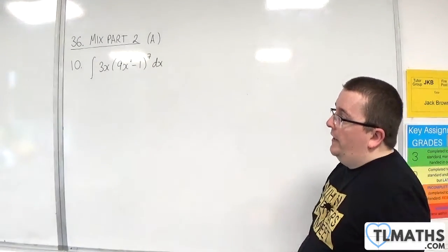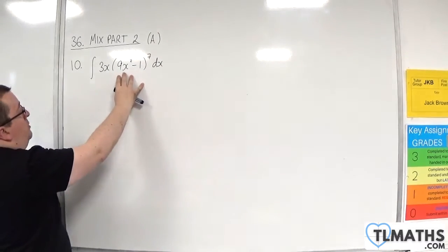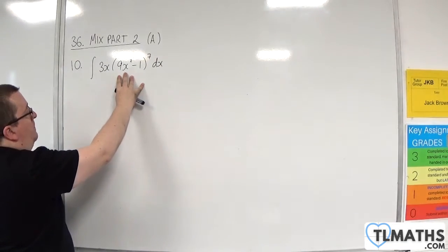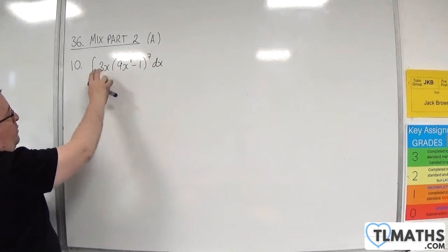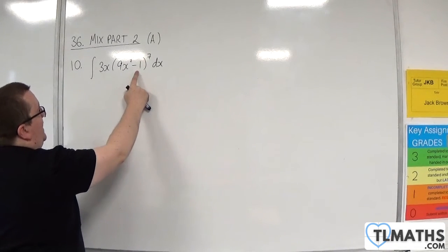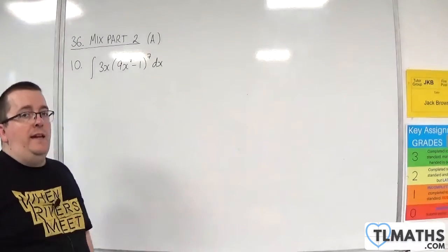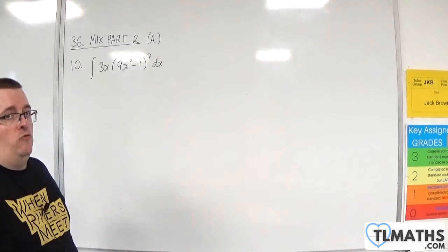Now, with something like this, again, take a look at your interior function, which is 9x squared, take away 1, and see if it differentiates to a multiple of what you've got on the outside. This differentiates to 18x. We've got 3x on the outside, so we've got 1 sixth of what we need. So we can use reversing the chain rule here.